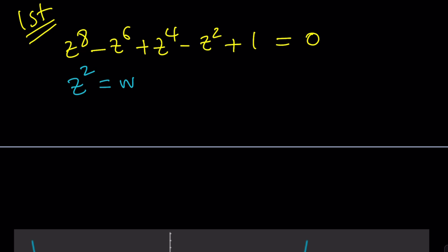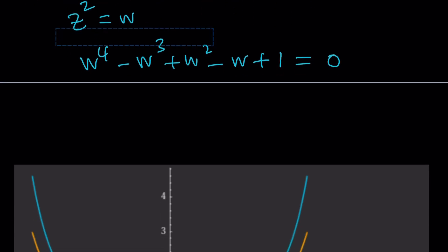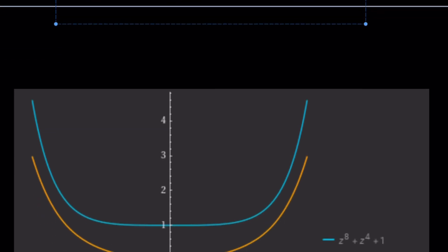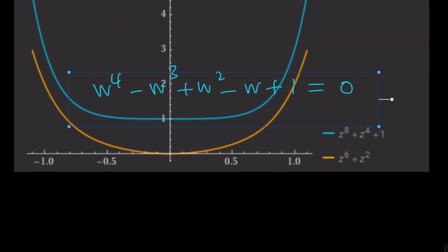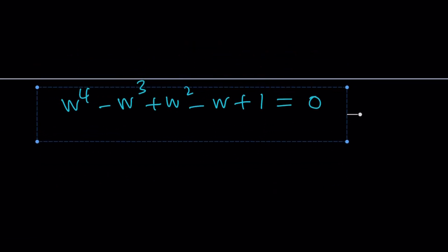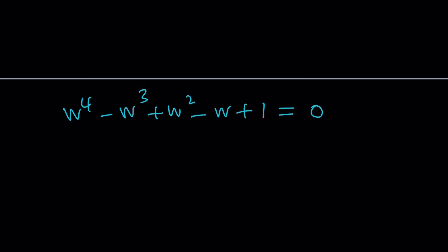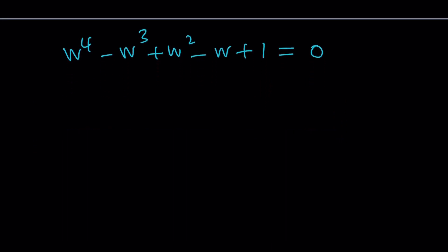Well, z squared equals w gives us the following. w to the fourth minus w cubed plus w squared minus w plus one equals zero. And we're going to solve this equation. Now, how do you solve this equation? I'm kind of lazy, so I'm not going to write that again. I'll probably just move this down so I don't have to copy that again. I heard a quote says a good mathematician is lazy. I'm not saying I'm a good mathematician, but I'm pretty sure I'm lazy. Anyway, so let's proceed.